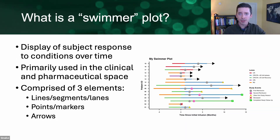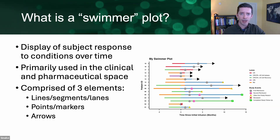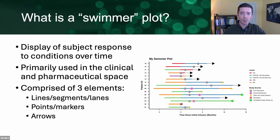I'm putting the cart before the horse here, so to speak, but on the right we have an output from the GGSWIM package displaying a sample swimmer plot. Effectively, this is a horizontal bar chart where each bar represents an individual subject and contains details about the subject's course in a given period. They are comprised of three elements: lines or segments or lanes, points or markers, and arrows indicating continuation of those lanes. Swimmer plots are particularly useful in clinical and pharmaceutical spaces where they offer granular, subject-level data and easy-to-interpret displays of key metrics such as adverse events and durations of responses.